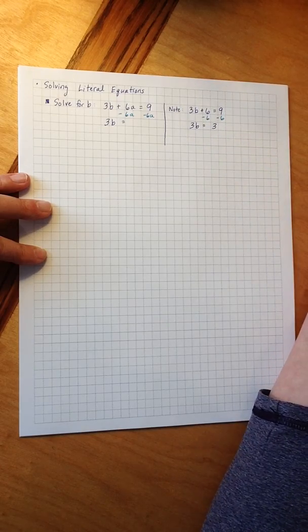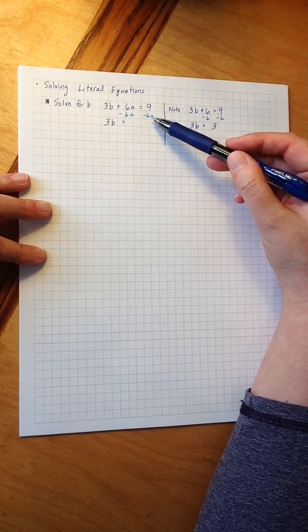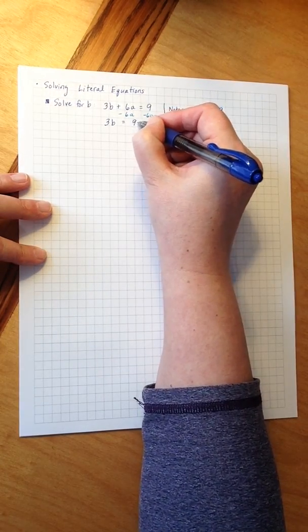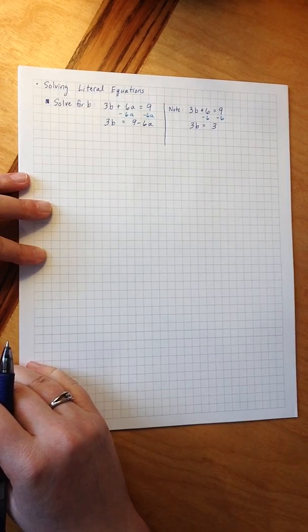In the equation we're trying to solve, however, I don't know what a is, which means I don't really know what negative 6a is. So I'm going to leave it as 9 minus 6a.